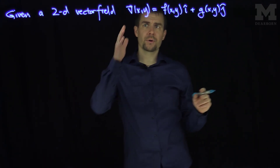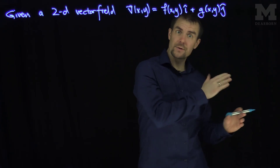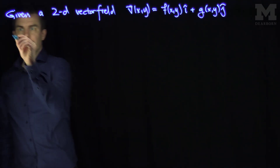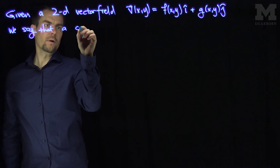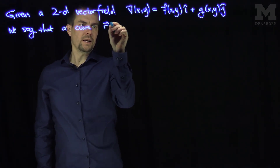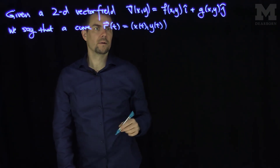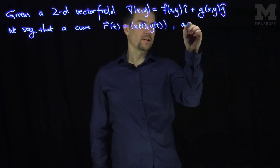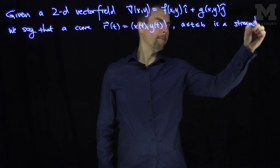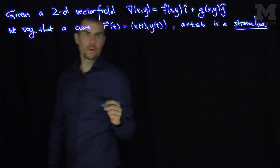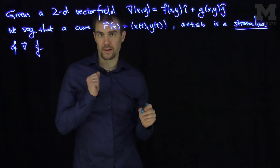For a three-dimensional vector field, we would write V of x, y, z with components f of x, y, z, g of x, y, z, and h of x, y, z in the k-hat direction — not much difference. We say that a curve r of t = (x(t), y(t)), where t goes between a and b, is a streamline of V if the following system of differential equations is satisfied.